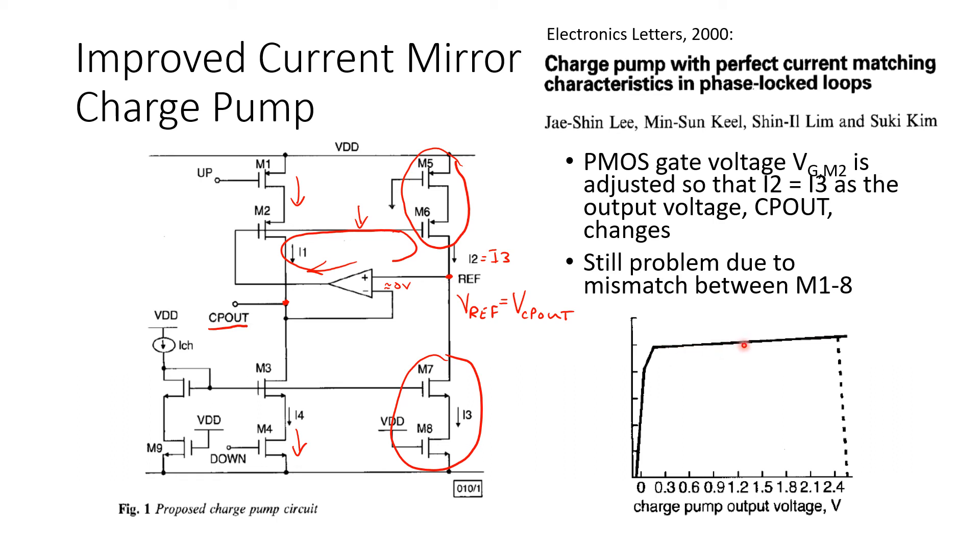But the current is not exactly the same. It is changing as a function of voltage. It's just that the pull-up current will constantly adjust itself to match whatever the pull-down current is. So as we expect, the pull-down current increases with increasing output voltage. And it's just that in this case, because of the feedback, the pull-up current tracks it across the full range.